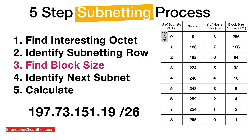So now we're at the third step of the five-step subnetting process. We've already identified the interesting octet, which is this one. We've already identified the subnetting row, which is this one. And now we need to find the block size.